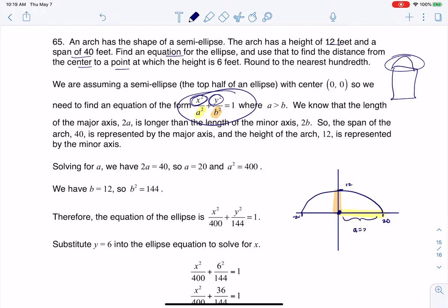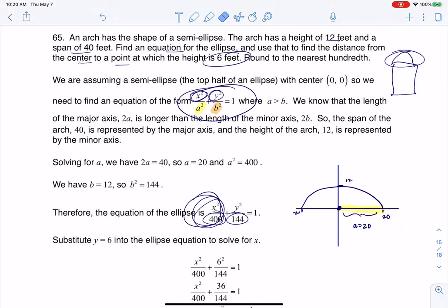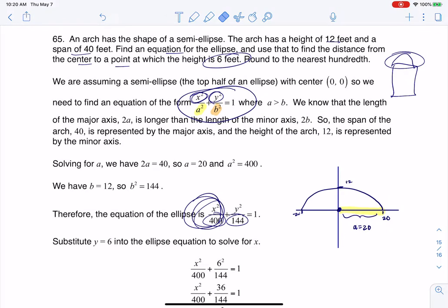So a is 20 and b is 12, and when I square them I'm going to get 400 and 144. I'm putting the larger number under the x variable because this is one of those horizontal ellipses. So we've got all of that going on and then it says hey find out where the height is 6.